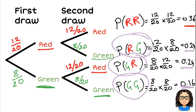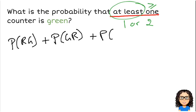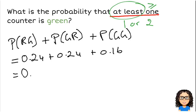So there are three different ways that I could get it. Notice the wording that I used. So I was saying probability of a red and then green, or a green and then red, or a green and then a green. So that's going to be our 0.24, plus 0.24, plus 0.16, and that will equal 0.64. And there's our answer.